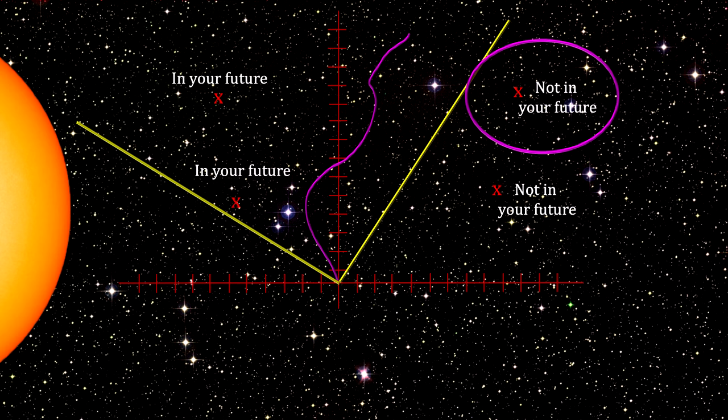The closer we get to the source of gravity, the greater the spacetime curvature. And the larger the matter curving the space, the greater the curvature. We'll take another look at this when we get to black holes.